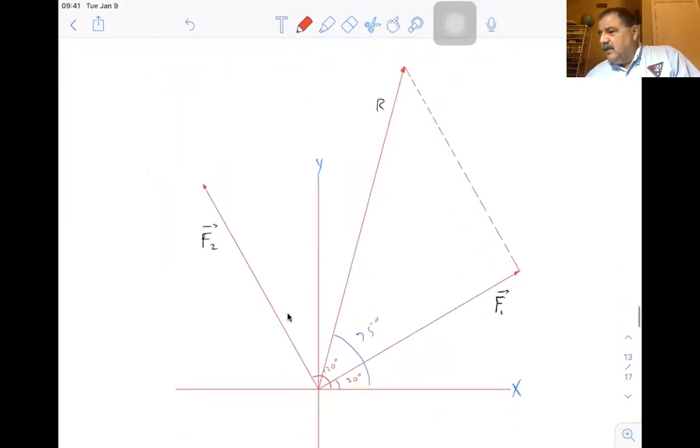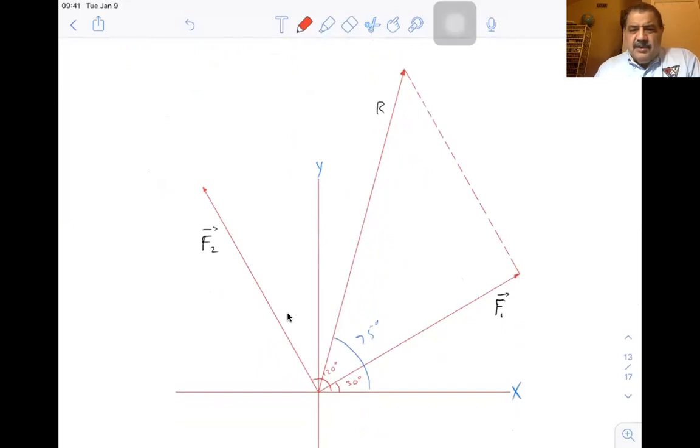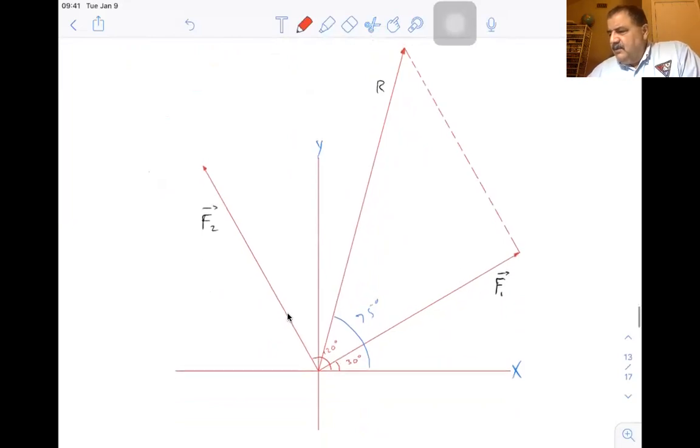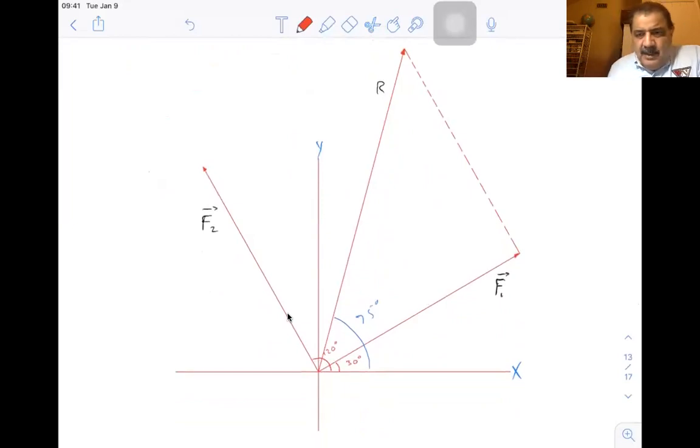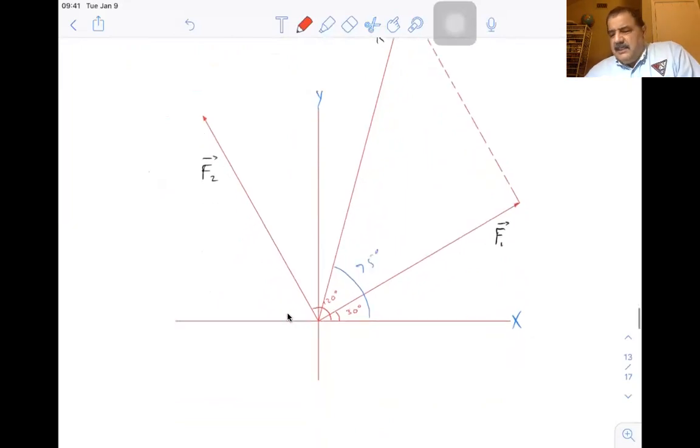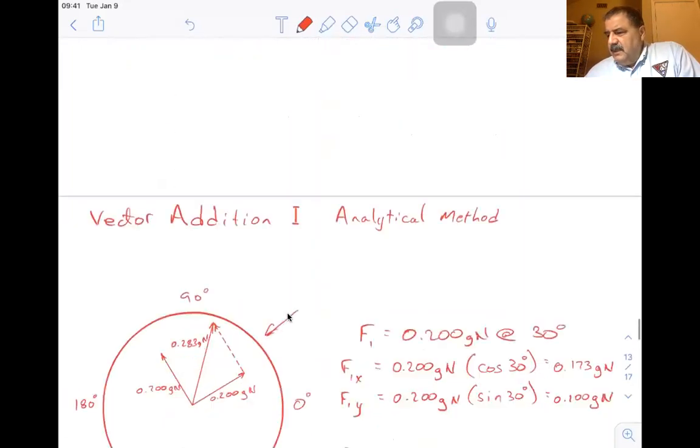So draw it big. Don't just draw a little one inch by one inch plot. You won't be able to get the resolution that you need to do the graphical method. So that's the graphical method. You measure R, you measure the length and you measure its angle and you come up with a value. It probably won't necessarily be the value that you get in the analytical method. That's part of the experiment. That's part of the learning.